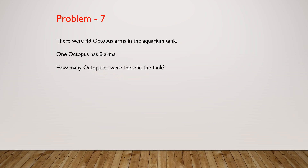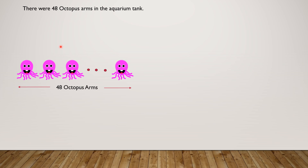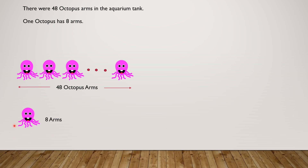Let's take this step by step. There were 48 octopus arms in the aquarium tank — so these are the 48 octopus arms. One octopus has 8 arms. You can see here that one octopus has 8 arms. How many octopuses were there in the tank?